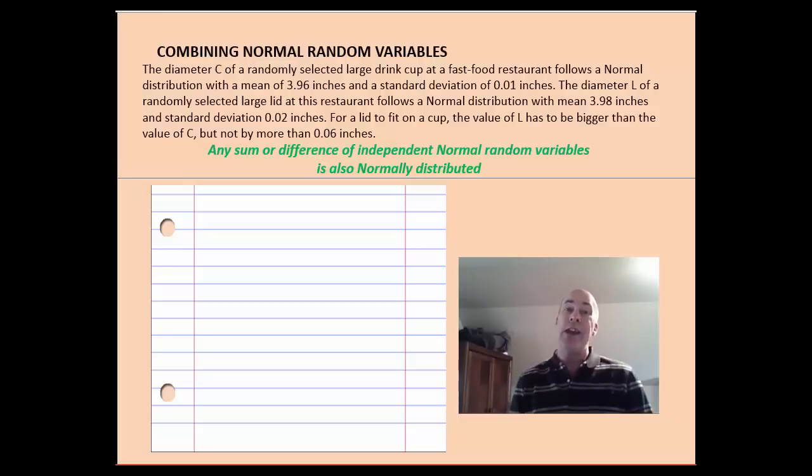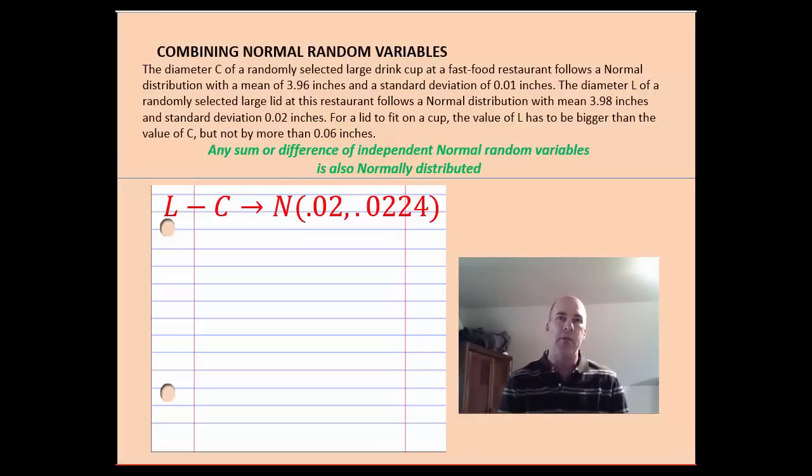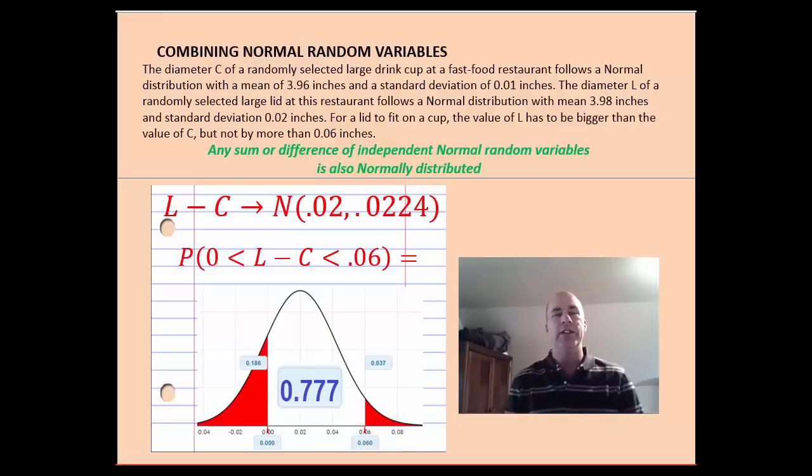So, I kind of need that fact here. What that allows me to say now is that lids minus cups follow a normal distribution. I see their mean, I see their standard deviation, and then this really just becomes a norm CDF problem from earlier chapters. I want the probability that l minus c is between 0 and 0.06. I probably use norm CDF in my calculator and I can see that that has a probability of 0.777. So, a lot of different rules here. Variances add, they never subtract. Standard deviations, don't add them together.